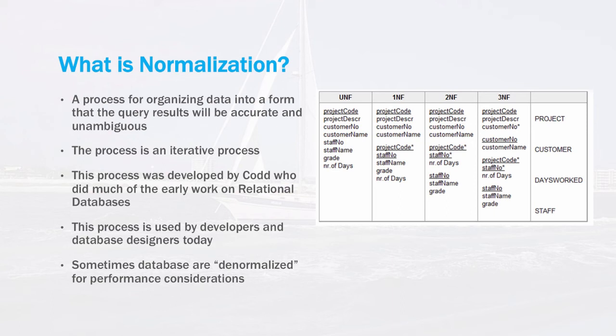Each step of the normalization process is used to develop a relational model that accurately describes the system being modeled and removes redundancies in the data to make it consistent. The steps of normalization are beyond the scope of this introductory material, but the important point to remember is that normalization is the defined process that database designers use to develop and refine relational models for production database systems.